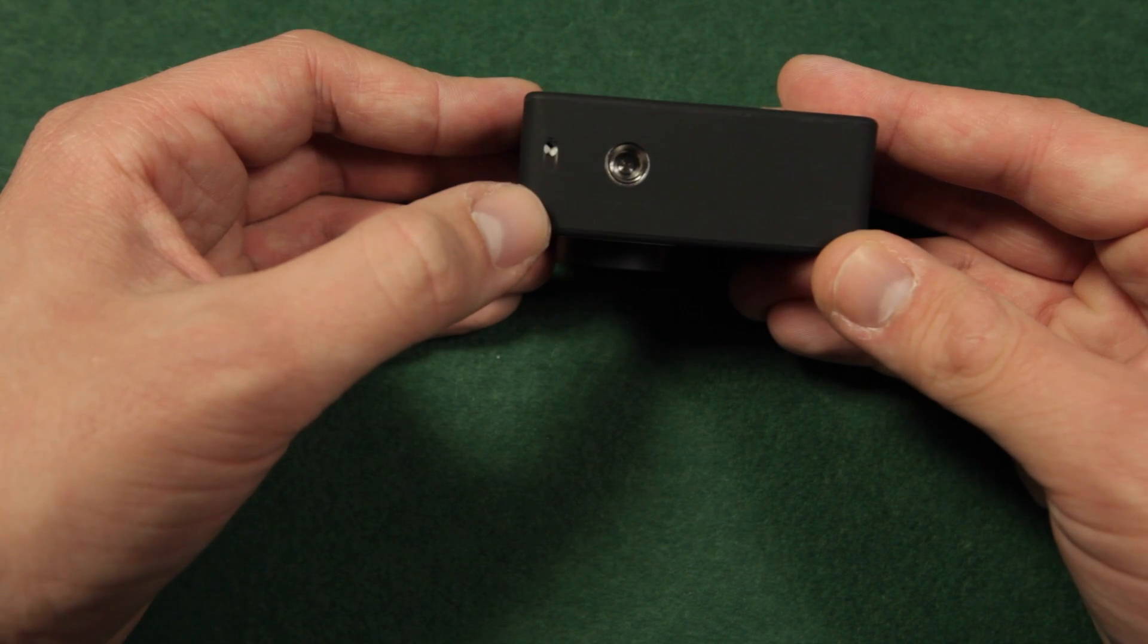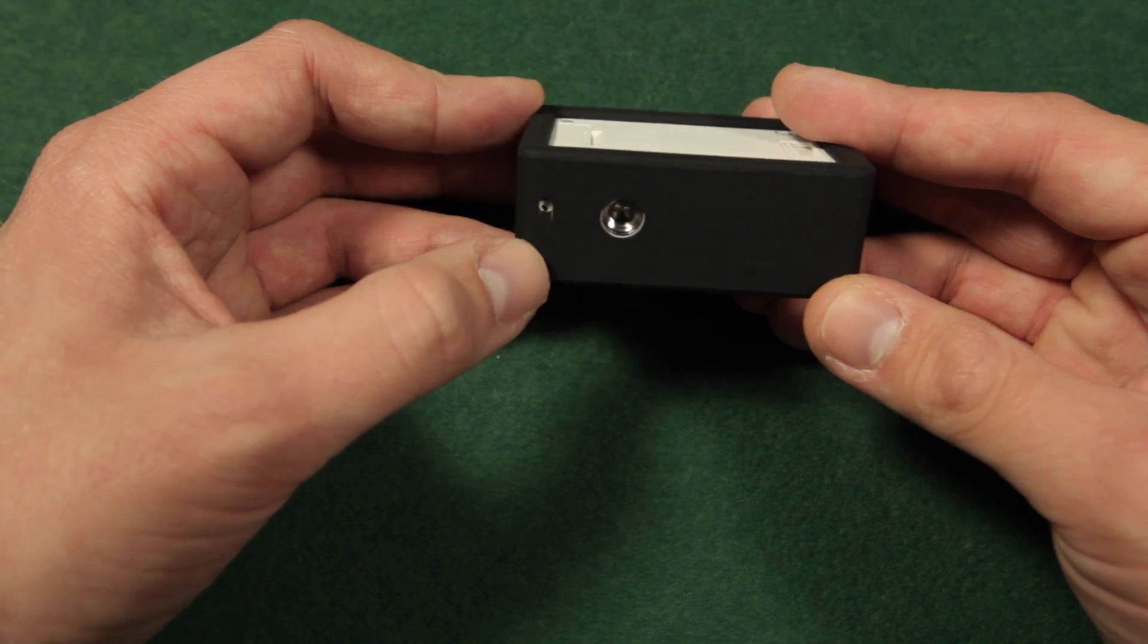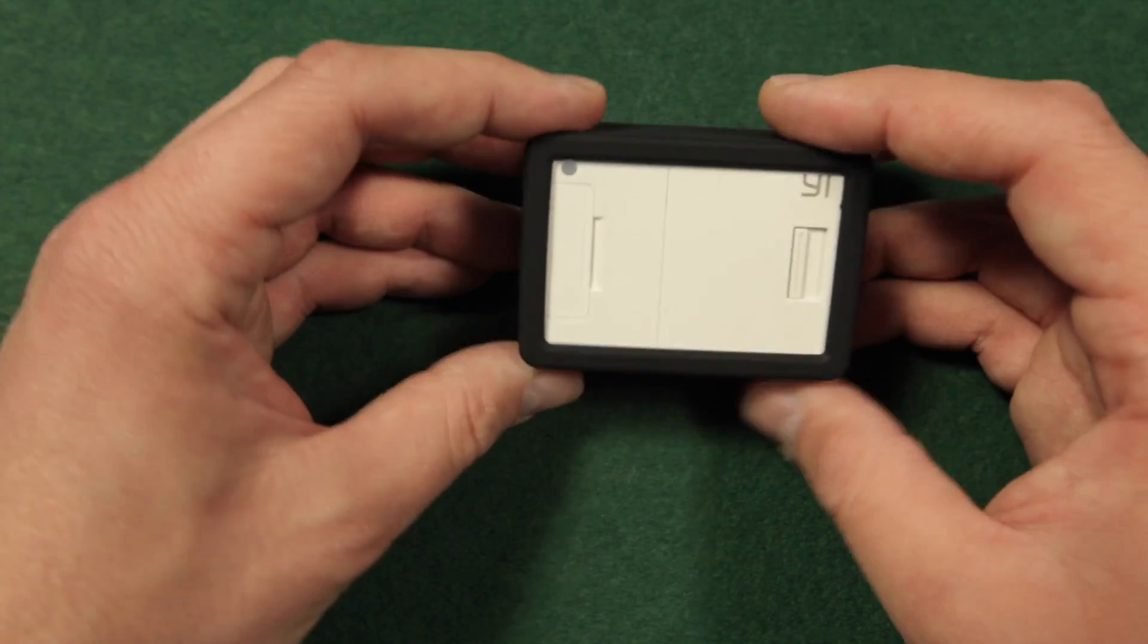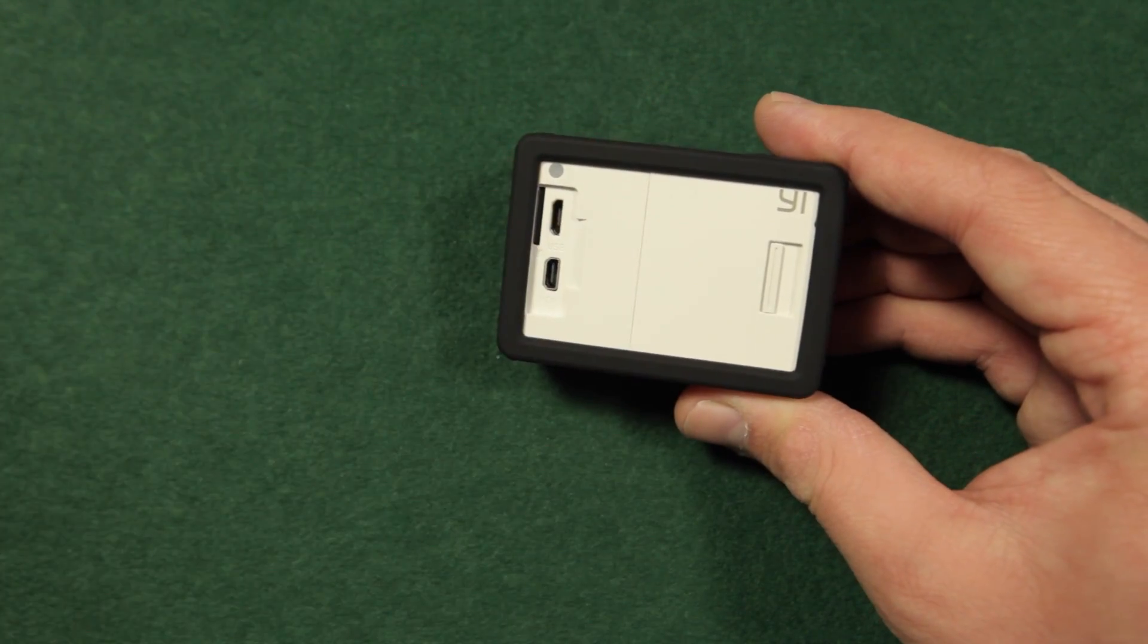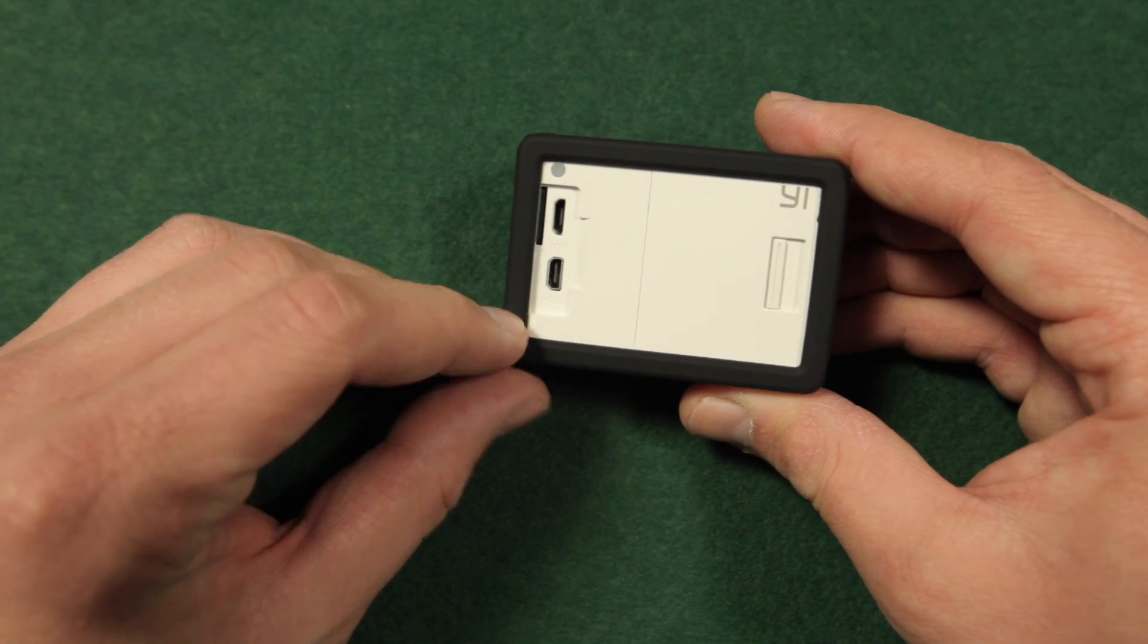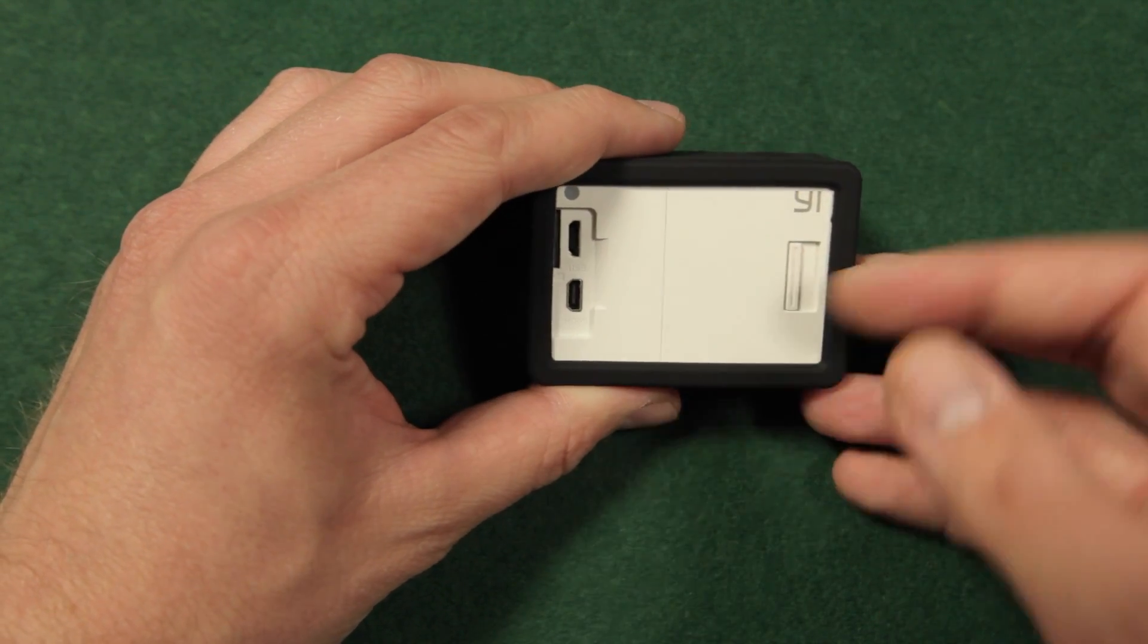You can mount the camera with the case on your accessories. The back side of the camera is not covered, so you have access to the USB port, HDMI, and micro SD card. But you have to pull it aside to access the battery.